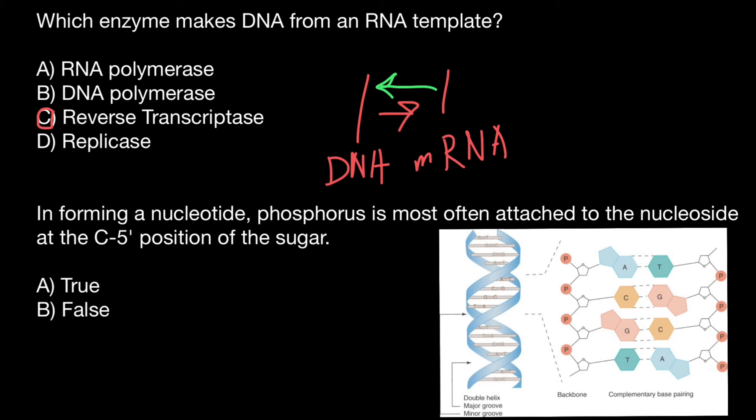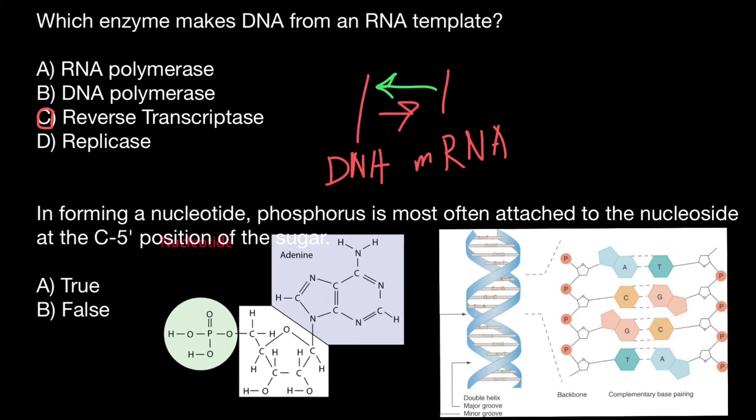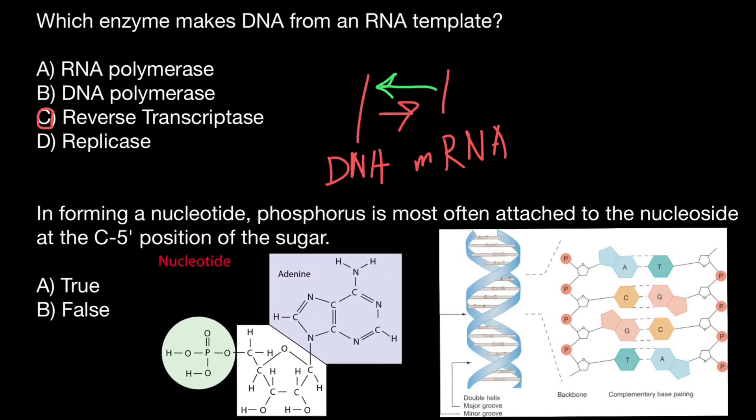But actually, take a look at this picture, which shows this nucleotide in more details. Again, this is adenine, what we see here. And this is pentose sugar, which is ribose.